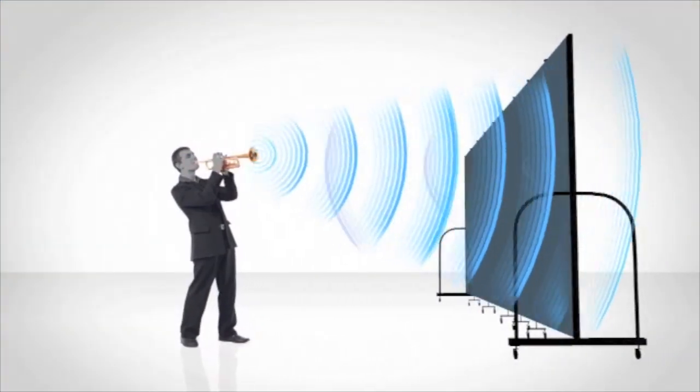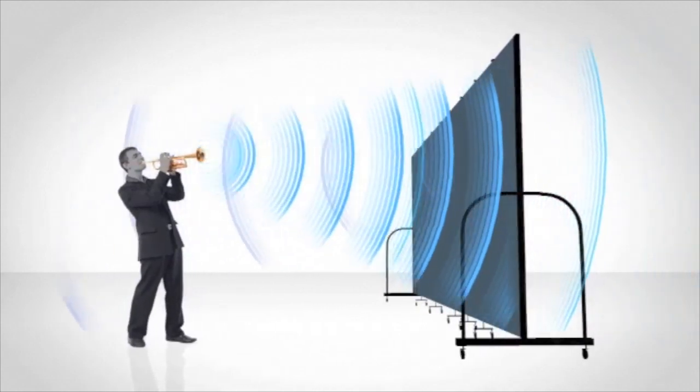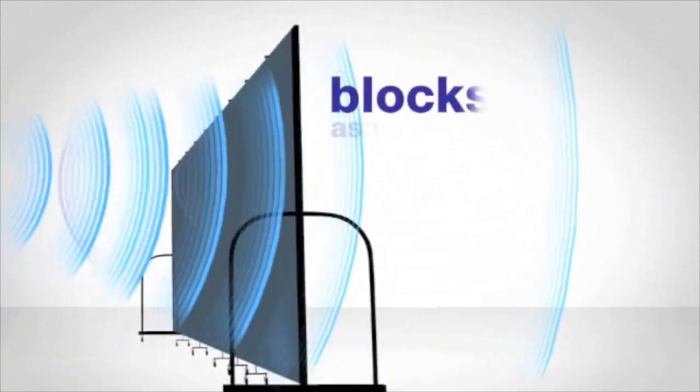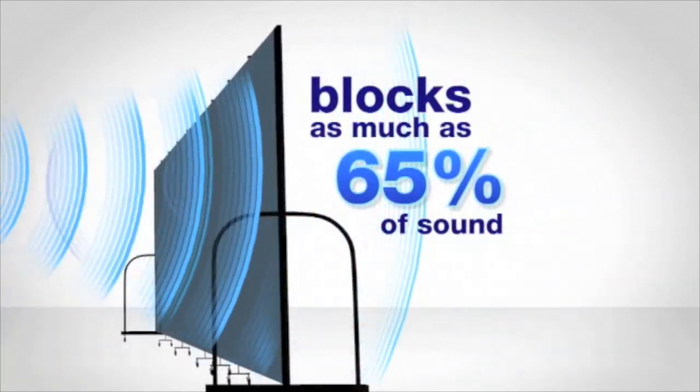As you can see from this illustration, sound waves are both reflected and absorbed by our dividers. Depending on the height, length, and configuration of your divider, as much as 65% of the sound will be blocked from one side to the other.